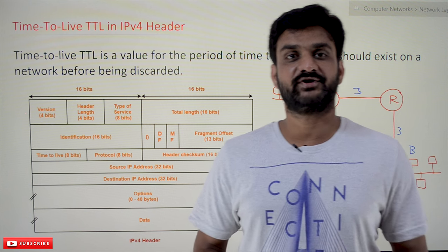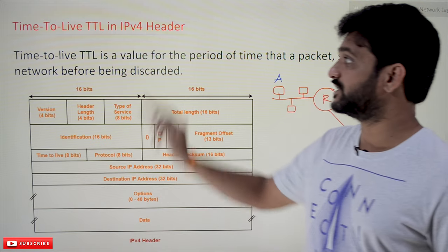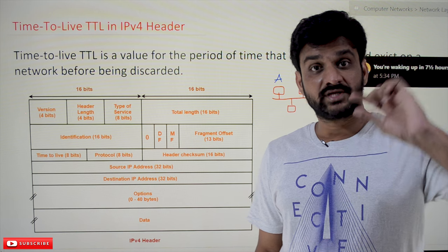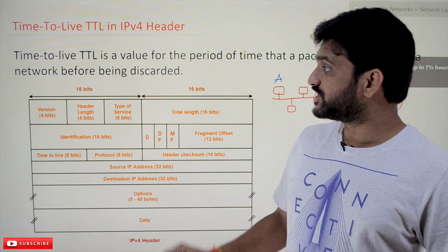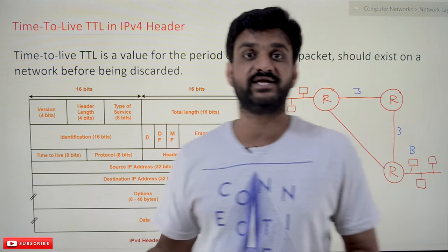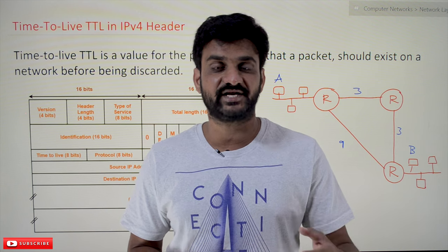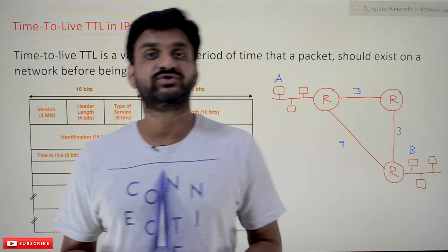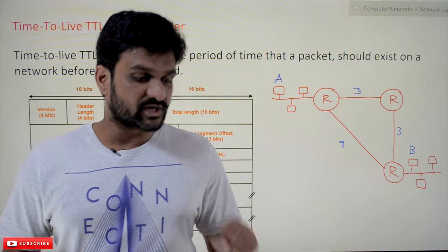Hi, welcome to Learning Monkey. I'm Vikram. In this class we'll try to understand Time to Live (TTL) in the IPv4 header. This field is present in the third row of the IPv4 header. The concepts related to the first and second rows have already been explained in our previous videos. Please watch those videos and come back. Every video in our channel is part of an entire course or playlist, and our suggestion is to follow the entire course for better understanding. The playlist link is provided in the description below.